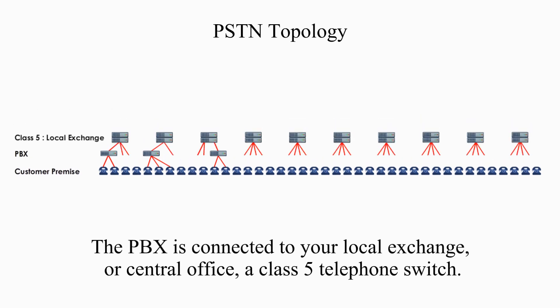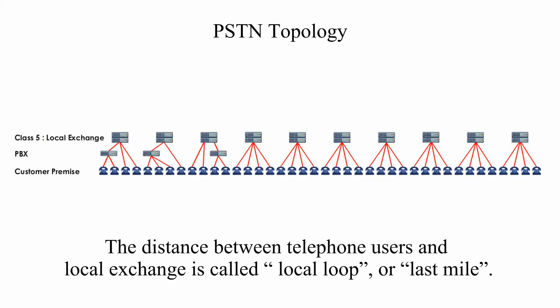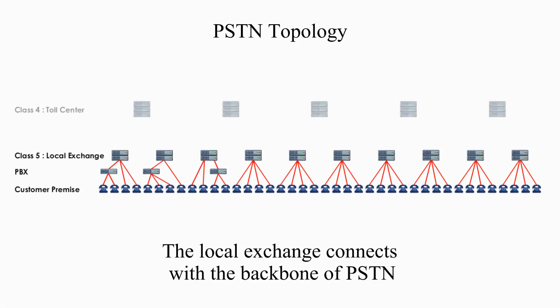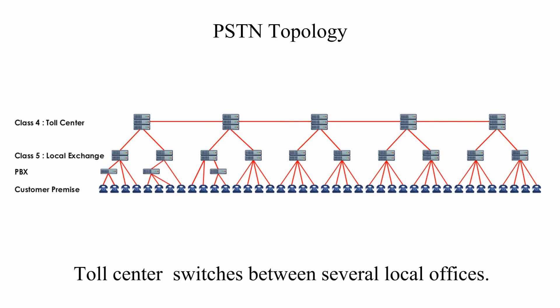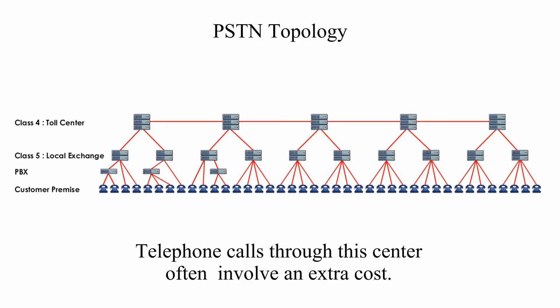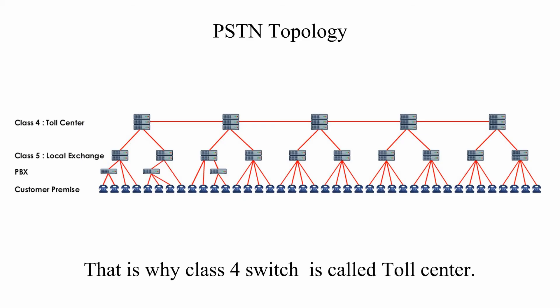The PBX is connected to your local exchange or central office, a Class 5 telephone switch. The distance between telephone users and the local exchange is called the local loop or last mile. The local exchange connects with the backbone of PSTN by communicating with the Class IV telephone switch, toll center or tandem office. Toll center switches between several local offices, and telephone calls through this center often involve an extra cost — that's why the Class IV switch is called toll center.